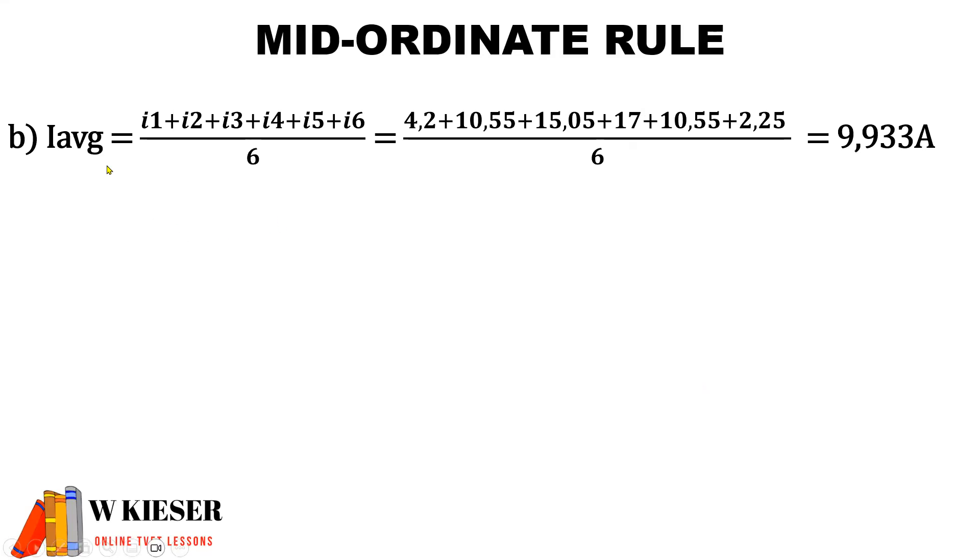Because we're dealing with current, we have the letter I and the units is amperes. We substitute the values for the mid-ordinates and divide by the number of mid-ordinate values, and we get 9.933 amps.